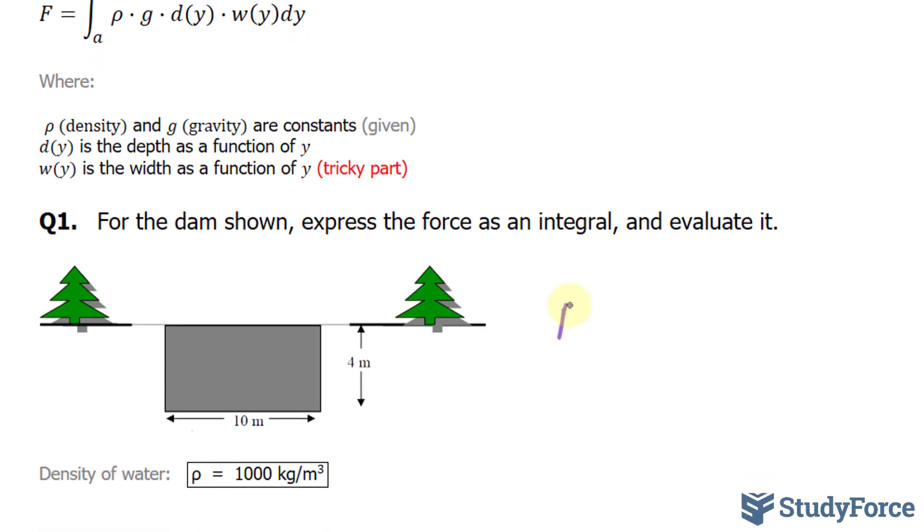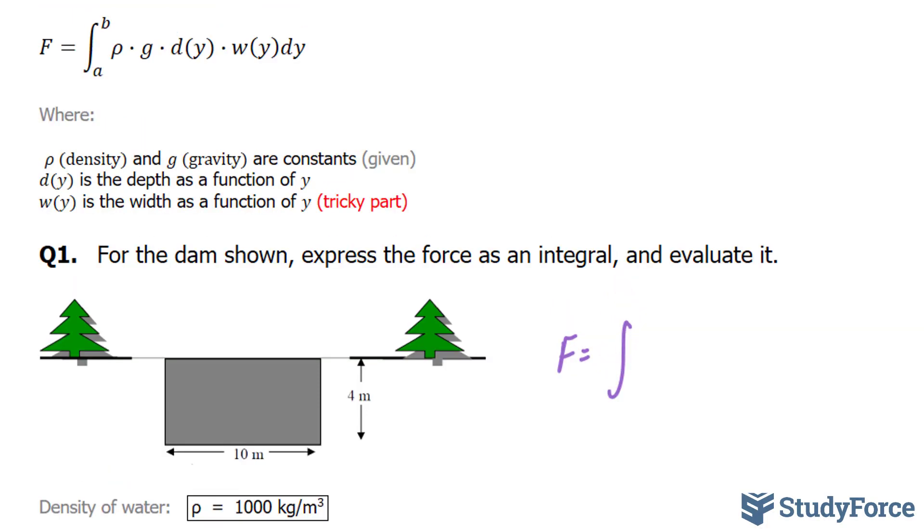Let's start by writing out force equals the integral between, and since it's with respect to y, it's the distance from top to bottom. In our case, it's zero to four. Keep in mind that for these examples, y is measured position downwards. Our density is given right here, it's 1000, and that's a constant. Our gravity is 9.8.